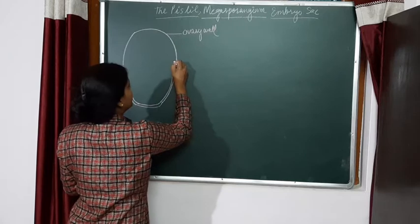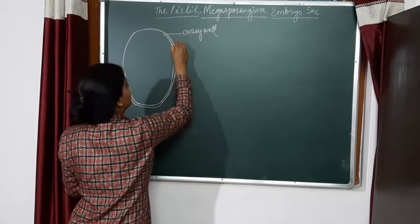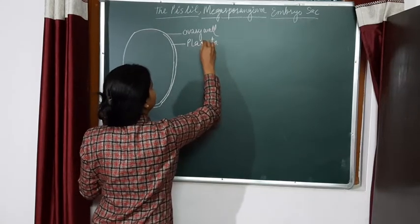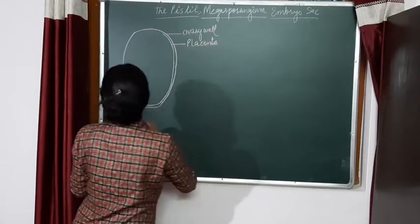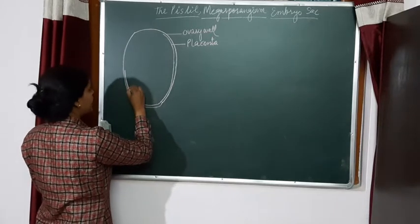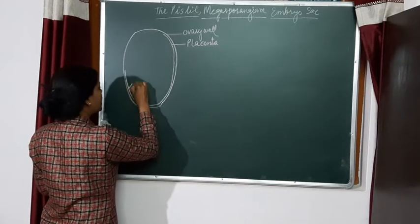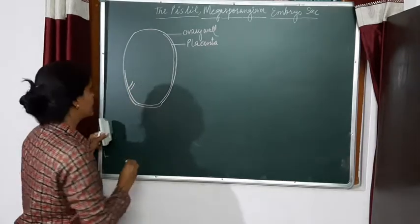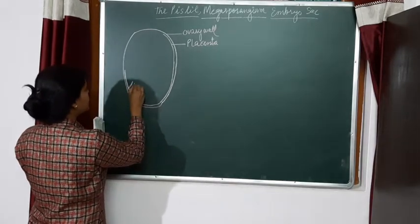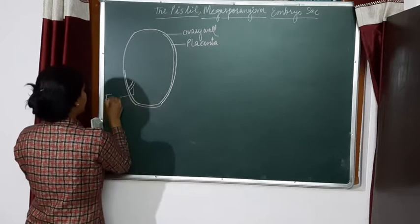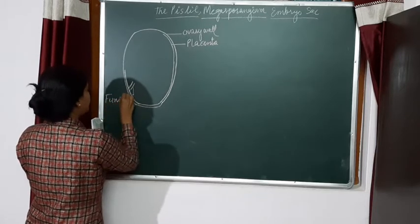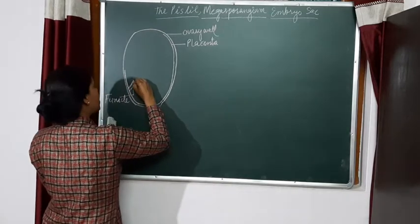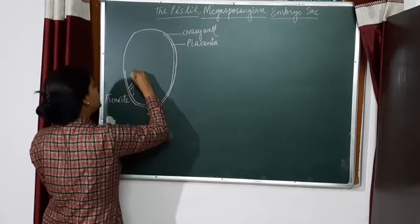Placenta is a small stalk-like structure. And this structure is called as funicle. The funicle is now fused to another structure.